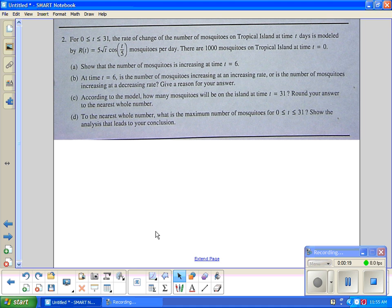For 0 ≤ t ≤ 31, the rate of change of the number of mosquitoes on Tropical Island at time t is modeled by R(t) = 5√(cos(t/5)) mosquitoes per day. This is an object per time, a rate of change. There are 1,000 mosquitoes on the island at time 0.